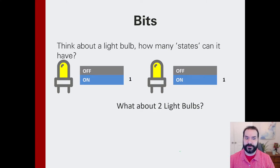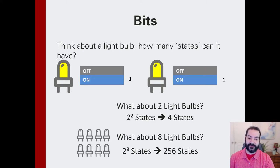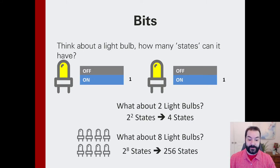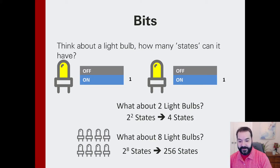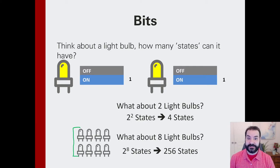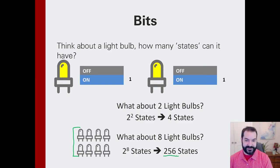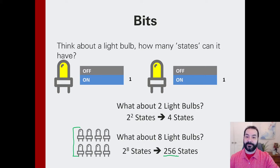We're working with two light bulbs, but what happens if we continue to expand this? Instead of two lights, look at a single byte — which we said was eight bits. If I have eight LEDs that can all be on or off in some combination, a single byte can represent 256 possible combinations. And it is through these combinations that we start to get what we think of as data.